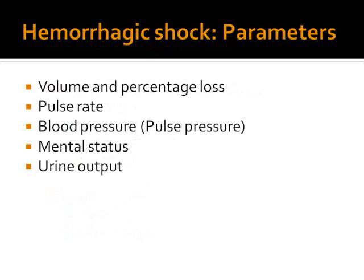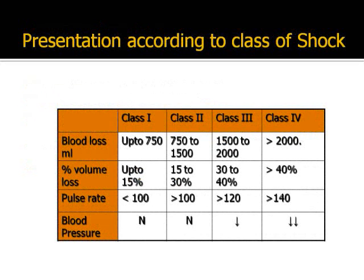There are four parameters we look at when we consider hemorrhagic shock. The first one is the definition of the shock itself — volume and percentage loss. Shock affects the pulse rate, the blood pressure and pulse pressure, and the mental status of a patient, and also the urine output. In fact, urine output is a very good indicator of tissue perfusion and should be monitored early. This table shows those presentations in some detail.